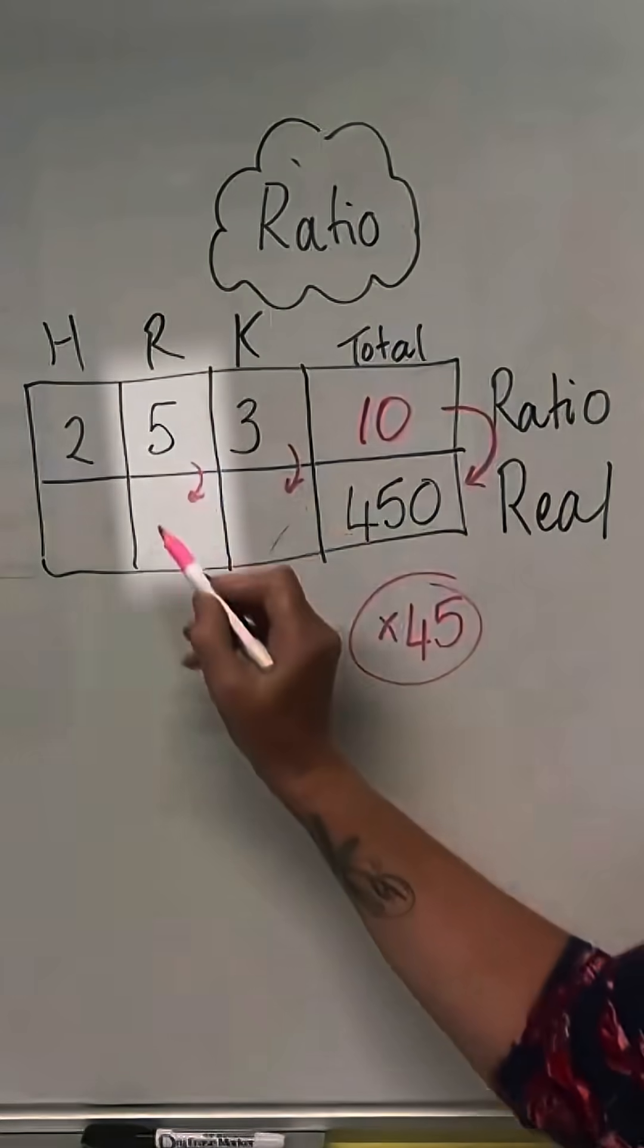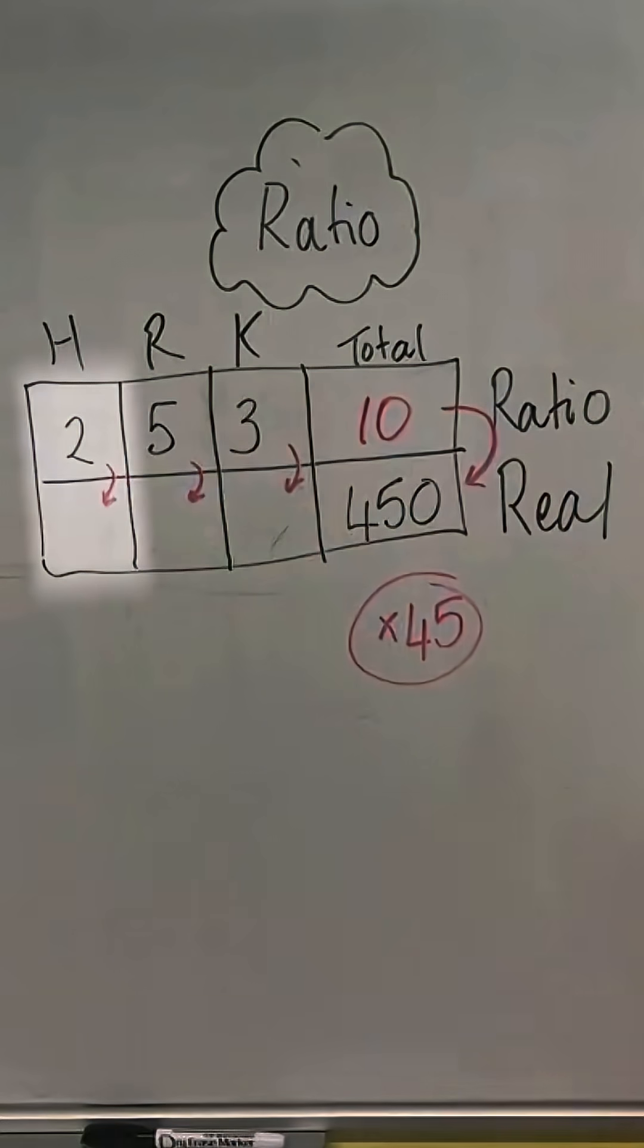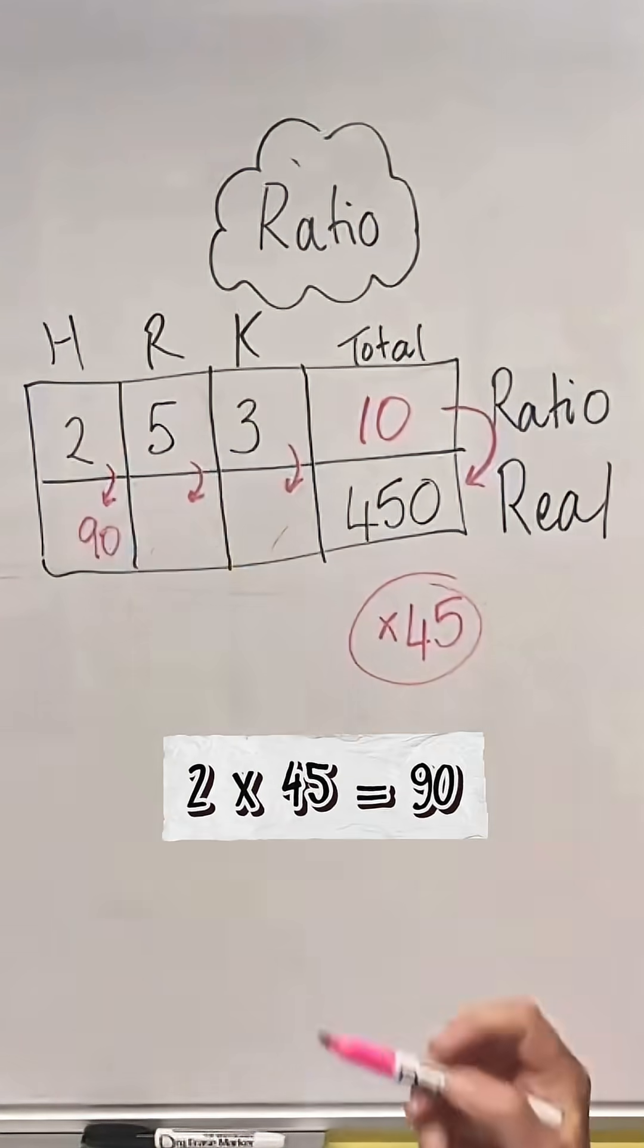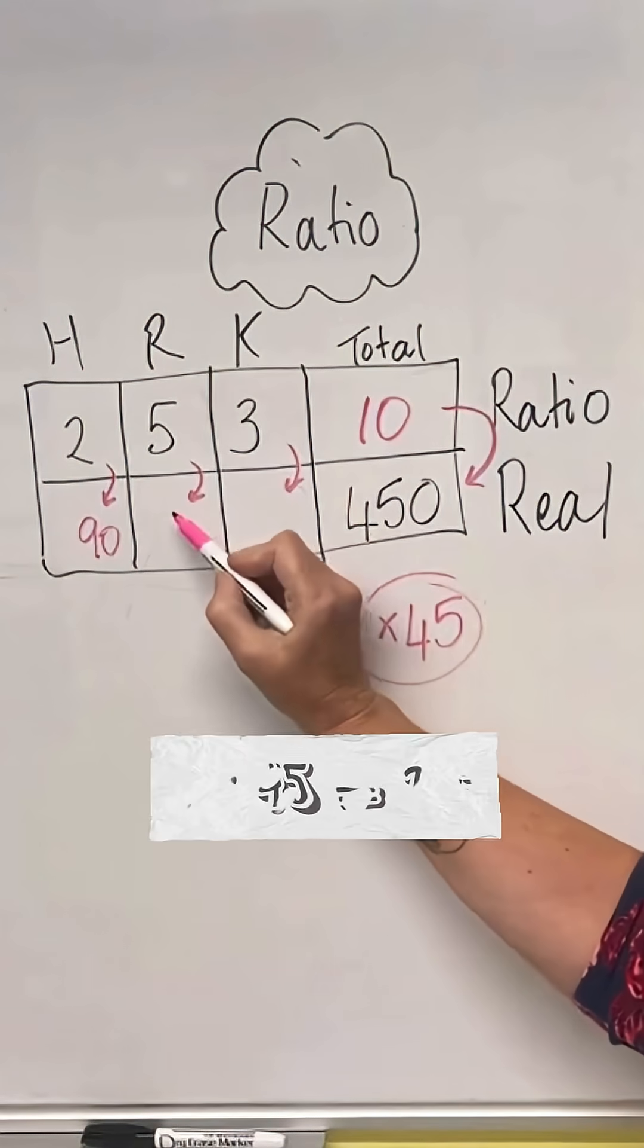So 2 times 45 is 90, 5 times 45 is 225, and 3 times 45 is 135.